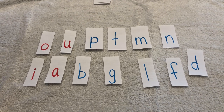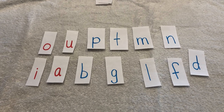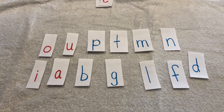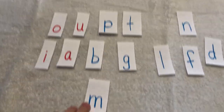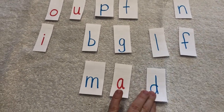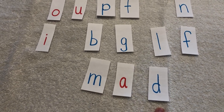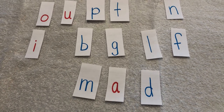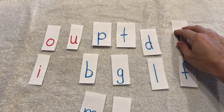All right, so let's start with all of this. I would like you to say the sounds in the word mad. Mad. Say the sounds: M, A, D. Name those letters: M, A, D. What's my word? Mad. If that says mad, make it say man. M, A, N.